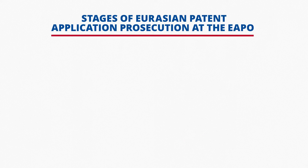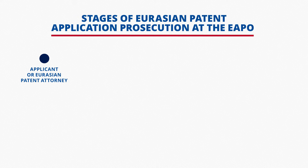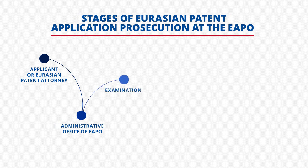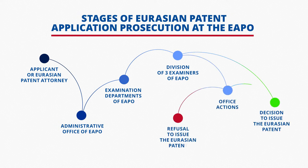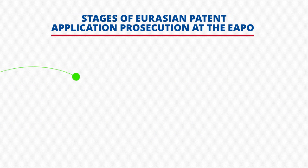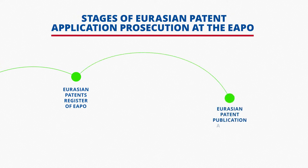Also important are certain details regarding the stages of Eurasian Patent Application Prosecution. After the application has been filed directly by the applicant or through a patent attorney, the application is forwarded to the administrative office where it is checked for compliance with formal requirements. If all the requirements have been adhered to, the application goes to the examination, upon completion of which a division of three examiners issues either a decision to grant or a refusal to grant the patent. If the decision to grant the patent is given and the relevant official fees for patent granting and publication have been paid, then the Eurasian Patent will be published and issued.